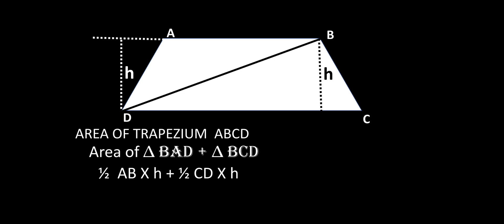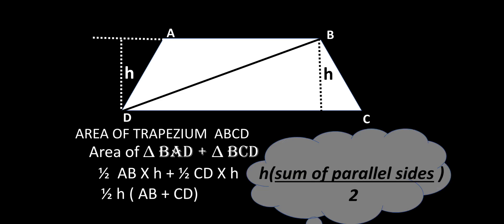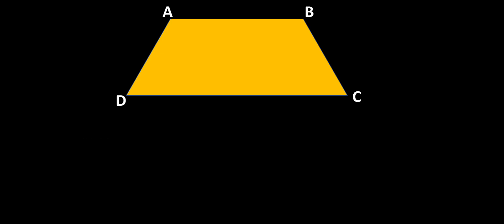Area of triangle BAD plus BCD equals half AB into H and half CD into H. When we take half H as common, we get AB plus CD. So the area of the total trapezium is the same result: H into the sum of parallel sides, that is AB plus CD, upon 2.